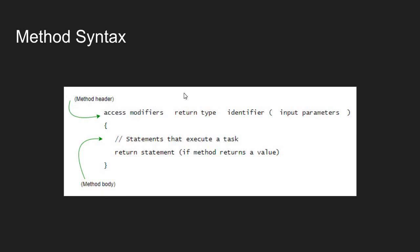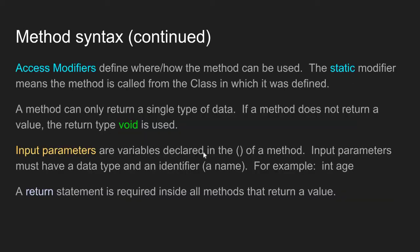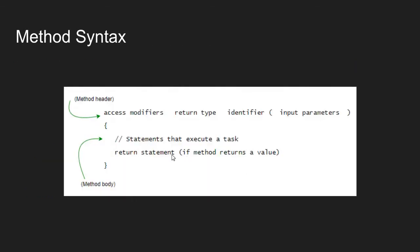Once we define the modifiers, the return type, give our method a name, and identify what values must be passed in, we attach a code block, write the statements that do our task, and then have a return statement. The return statement is where we exit from our method. A return statement is required inside all methods that return a value. If a method doesn't return a value, the return statement is implied at the end of the method body.